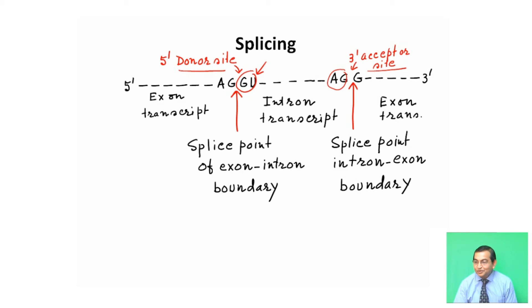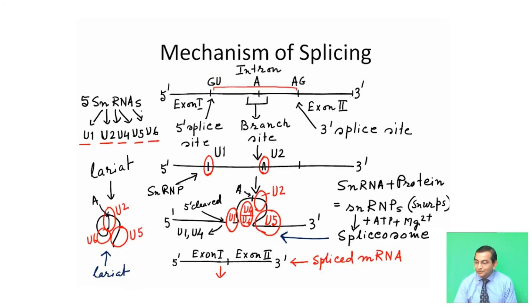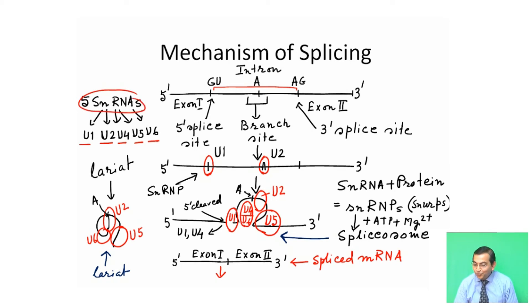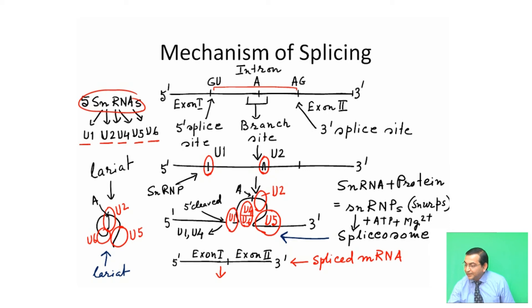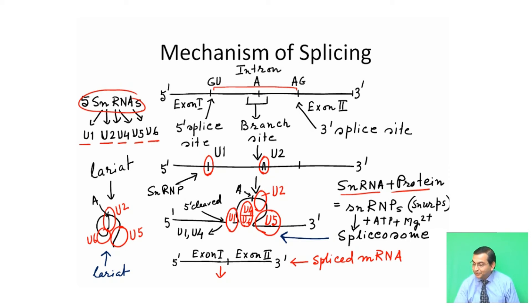The intron is spliced out by small nuclear RNAs (snRNAs). There are five snRNAs involved: U1, U2, U4, U5, and U6. These snRNAs bind with proteins to form small nuclear ribonucleoproteins (snRNPs). Together with ATP and magnesium ions, these snRNPs help in the splicing process, and they are collectively called the spliceosome.